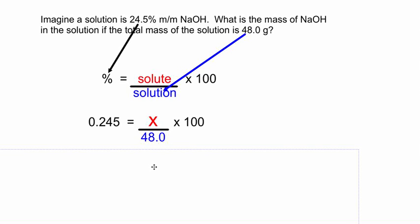So this is what our equation looks like, and we're solving for x. We're solving for the grams of NaOH, which is the solute that's dissolved in there.